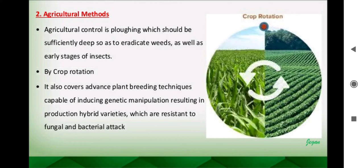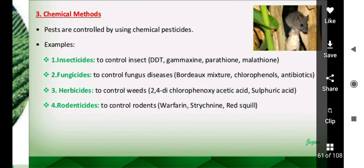In agriculture, we can also do crop rotation. As seen in the image, we do not cultivate the same crop on the same land, because if one insect is habituated to completing its life cycle in one crop, changing the crop means it cannot get the food and other things suitable for that plant, so it will automatically be destroyed. Third, advanced plant breeding techniques including genetic manipulation can produce hybrid varieties resistant to fungal and bacterial attack.